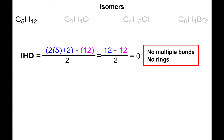An IHD of zero tells us there are no rings and no multiple bonds, so don't draw either of those for your possibilities. The first thing to do is draw the molecule in a linear fashion from left to right with a total of five carbons. This gives you a linear alkane — it's fully saturated with an IHD of zero.